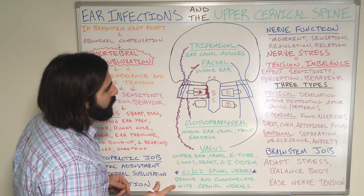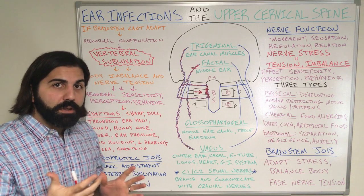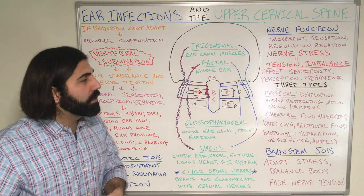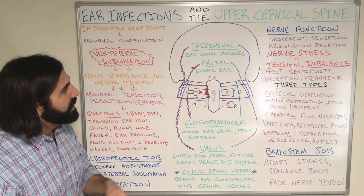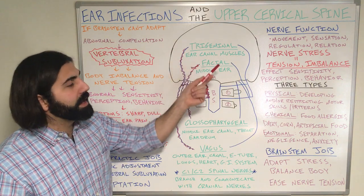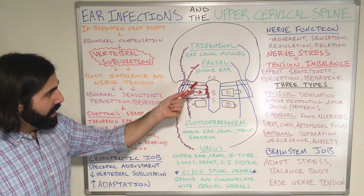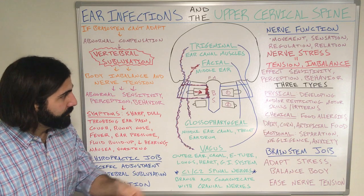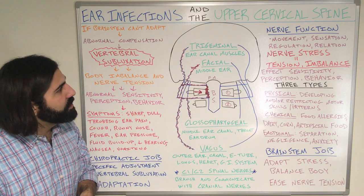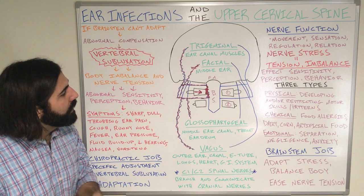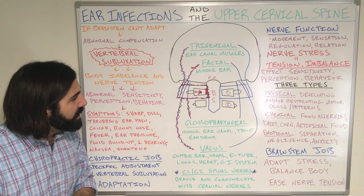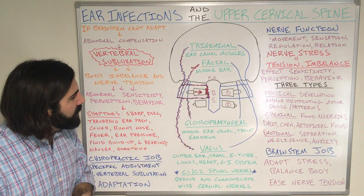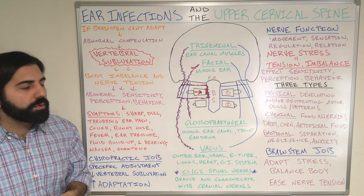Along with those four main structures, we're going to focus on five specific nerve groups. The first group is the trigeminal nerve, or cranial nerve 5. It supplies function to the ear canal muscles. Next down, we have the facial nerve, or cranial nerve 7. It supplies functional information to the middle ear. Next down, we have the glossopharyngeal nerve, or cranial nerve 9. It supplies function to the middle ear canal, throat, and eardrum.